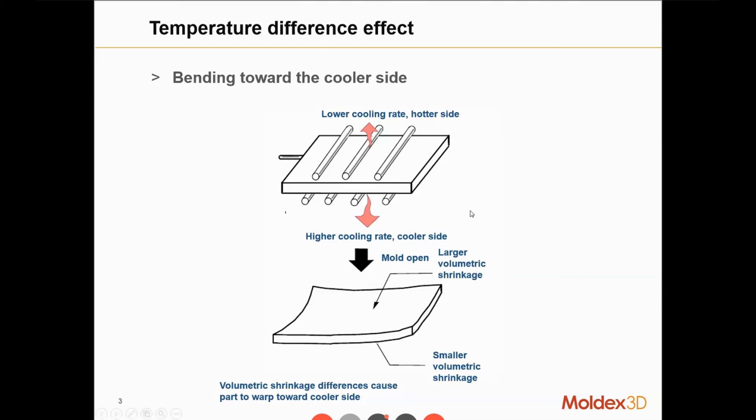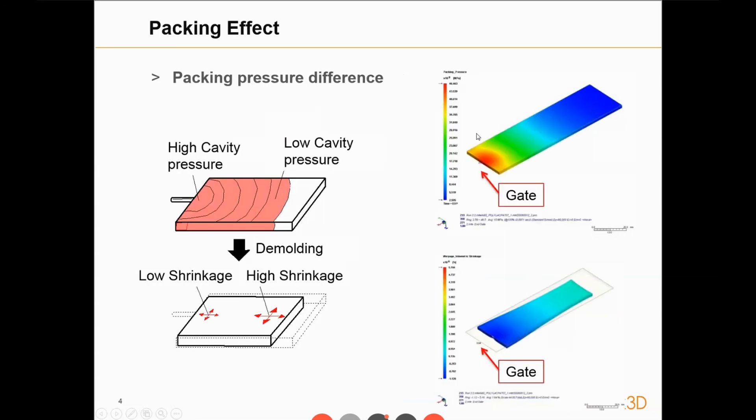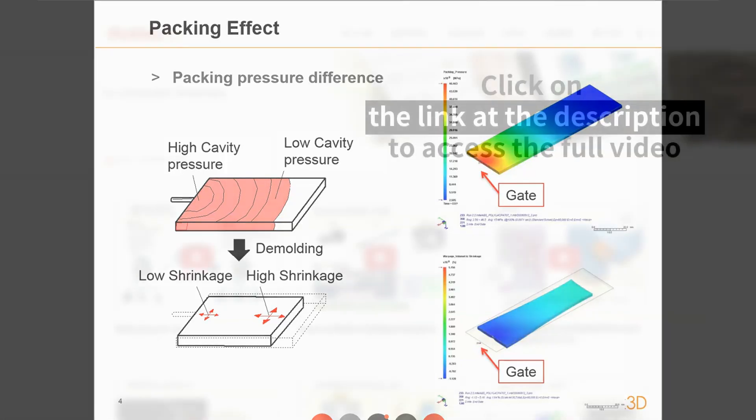On the upper side, there is a heat accumulation phenomenon, resulting in large volumetric shrinkage. On the bottom side, there will be smaller volumetric shrinkage. As the mold opens, the part will warp toward the hotter side because of the larger volumetric shrinkage on that side.